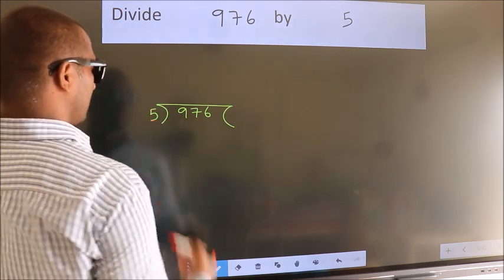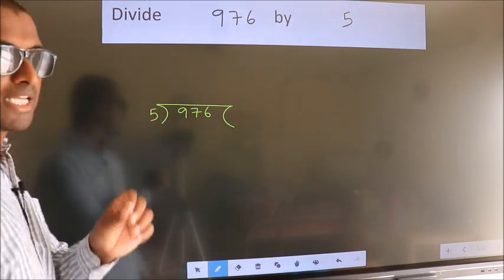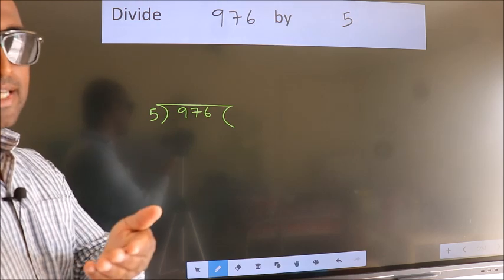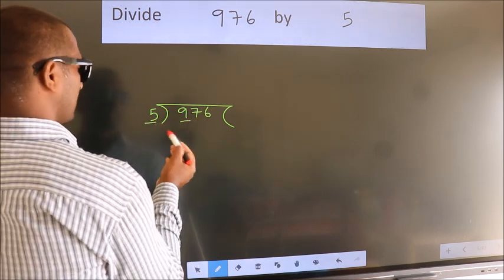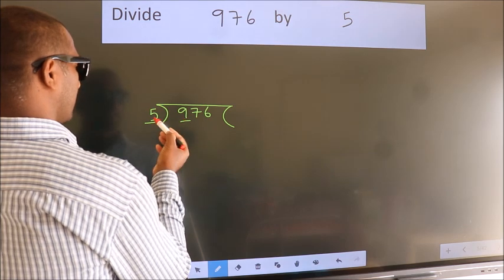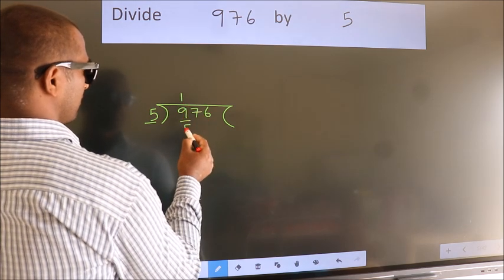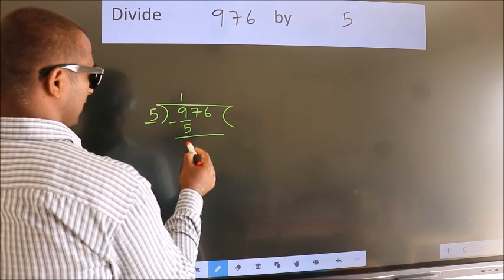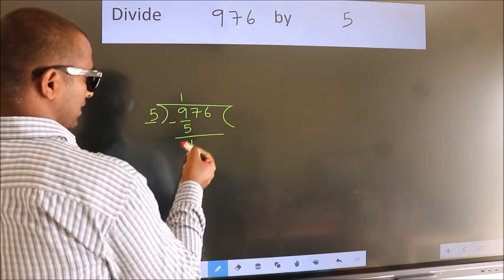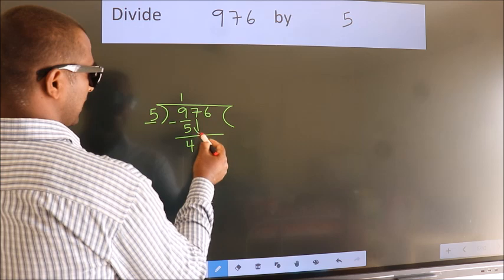Next, here we have 9 here 5. A number close to 9 in the 5 table is 5 once 5. Now we should subtract, we get 4. After this, bring down the beside number, so 7 down.